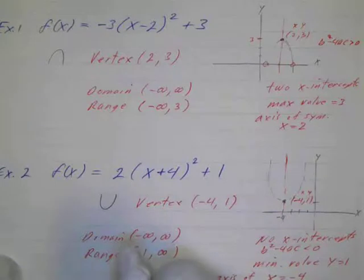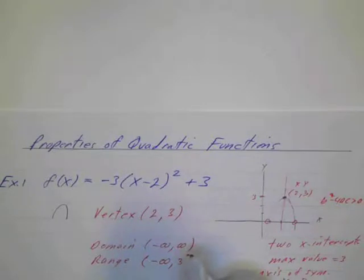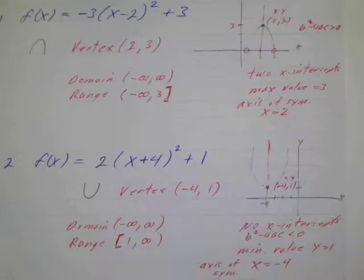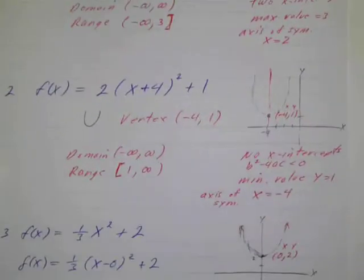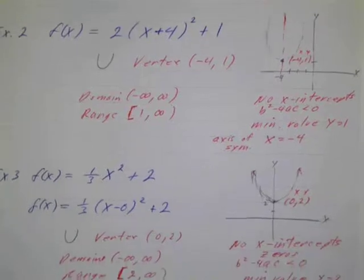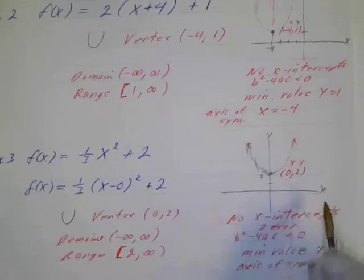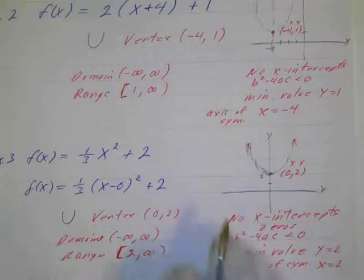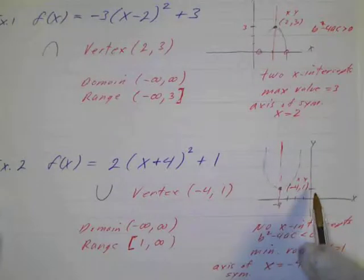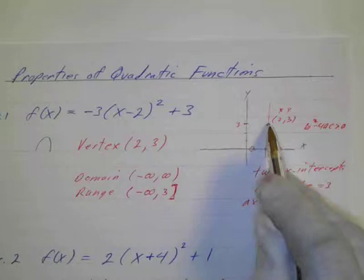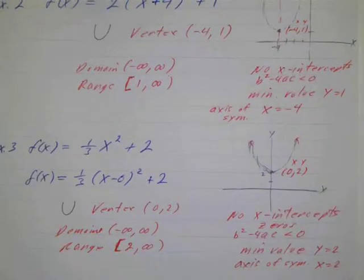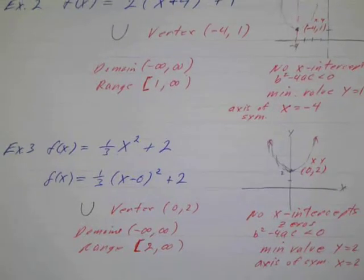So this should be a bracket here. And this should be a bracket here because it's equal to 3. So make a correction on the previous videos there. Because the range goes from 2 to infinity, and infinity is always open. And this range goes from 1 to infinity, and this range goes 3 down to negative infinity. So that was an error there. Make sure you make a correction on that. All right, I'm going to do one more here.